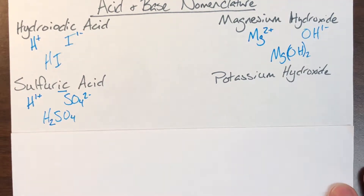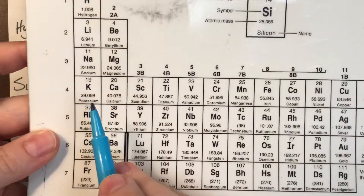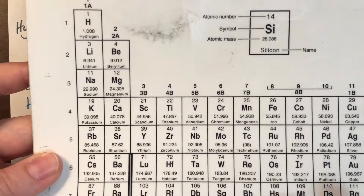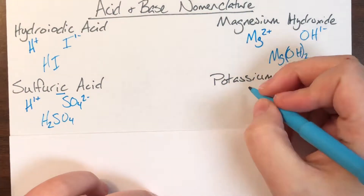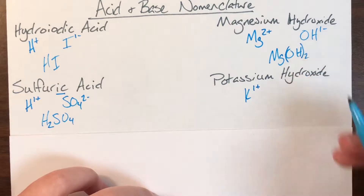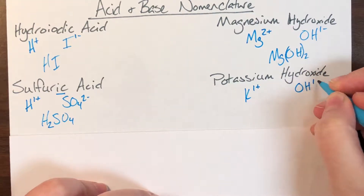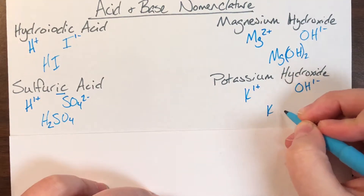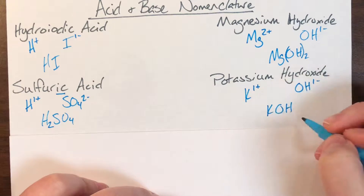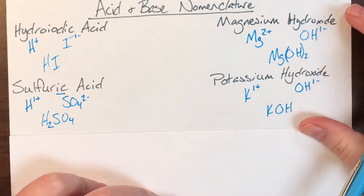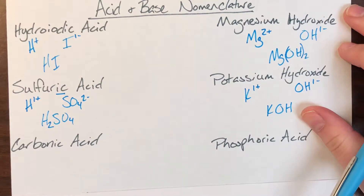Next we have potassium hydroxide. Potassium is K. It's in the first column, which means it has one valence electron, and it's going to give away that one valence electron rather than try to steal seven. So K has a charge of positive one, and hydroxide is OH with a negative one charge. When I write them together, I get KOH. Potassium's one becomes hydroxide's one — I don't write it — and hydroxide's one becomes potassium's one — I don't write it either.